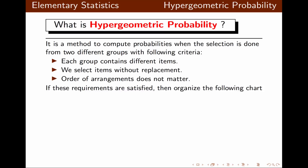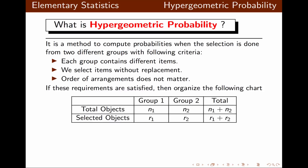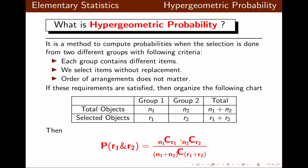If these requirements are satisfied, we organize the following chart. For each group, we have the numbers, the number of selections, and the total. This is the formula for hypergeometric probability using the combination formula. It seems intimidating in the beginning, but it's actually an easy process.